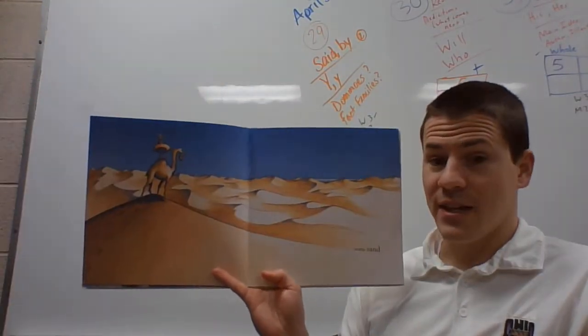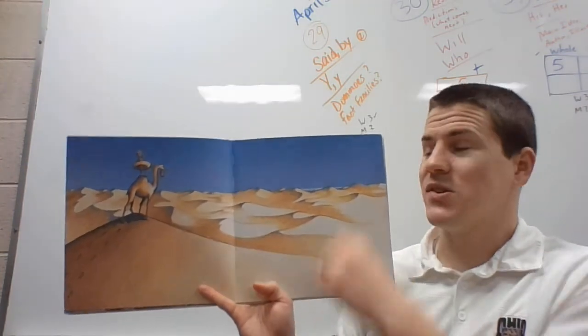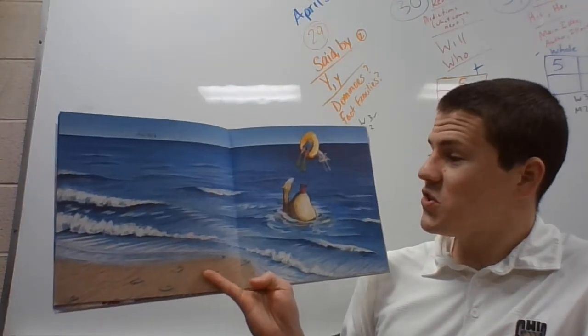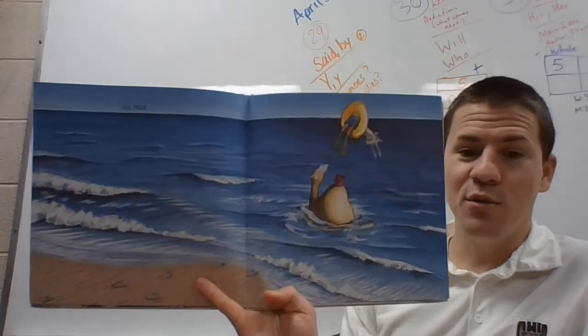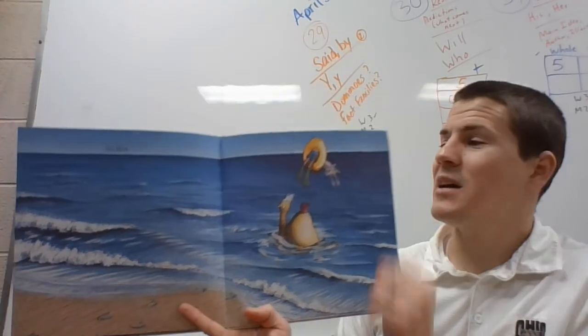Some sand. He might be in the Sahara Desert. Oh! The sea! How did he do that? That's a fast camel.